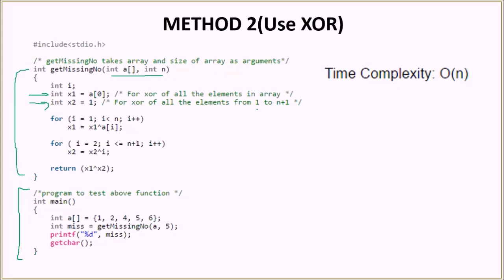Note that again we are doing XOR from 1 to n plus 1 and not n here. Because right now the size of the array is 5, but it should be n plus 1 after including the missing element. Here we are doing the XOR of the X1 with all the array elements and we initialize it with the first value.